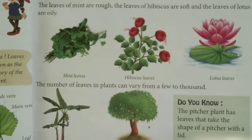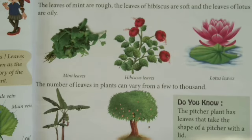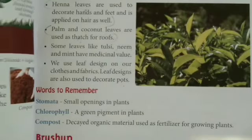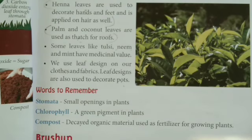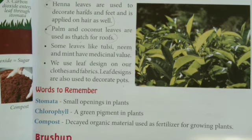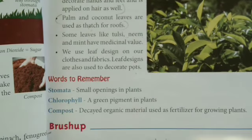Leaves are the most important part of a plant. They have different shapes and different sizes. Today we completed the reading of Chapter 6, Leaves Around Us. You should also read it. In the next video we will do the question answers. Okay students, now it's time to say bye. Bye bye students, have a nice day.